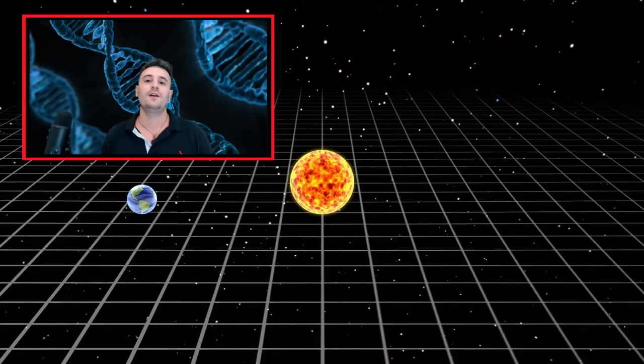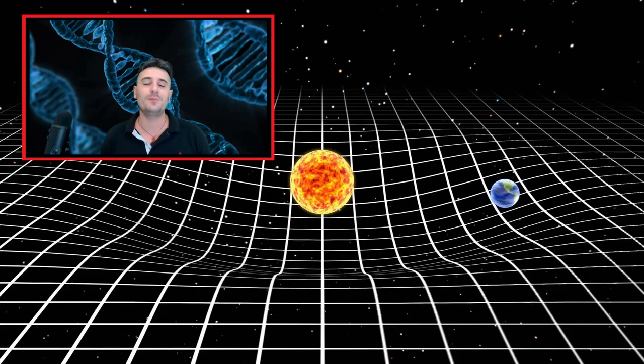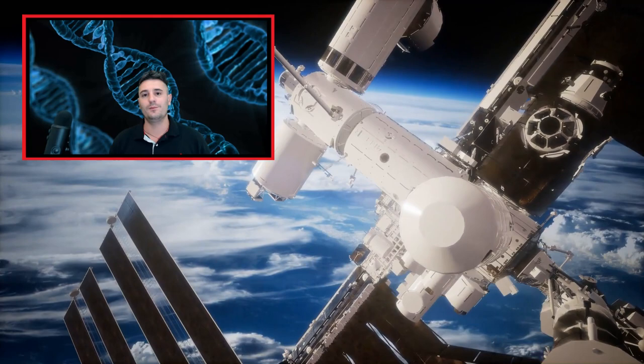The International Space Station is only about as big as an American football field, but it took 30 launches to assemble. Building an O'Neill Cylinder would require thousands of Earth launches, even using today's biggest rockets. This would be a huge undertaking.